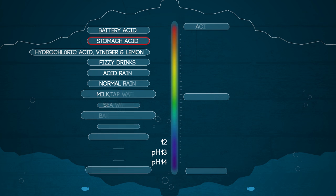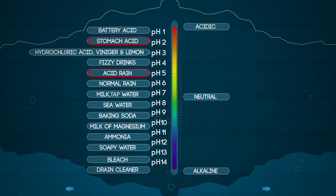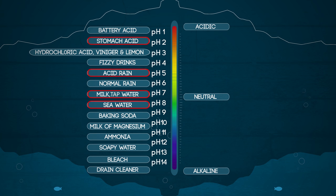Stomach acid is a strong acid with a pH of about 2. Acid rain has a pH of about 5.5. Milk is neutral with a pH of 7. Seawater is slightly alkaline. Soapy water is strongly alkaline, and bleach is a really strong alkaline with a pH of 13.